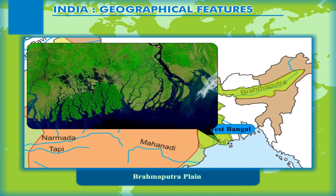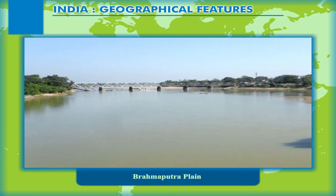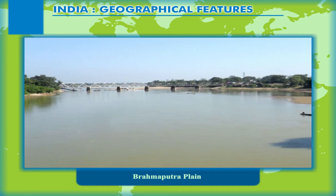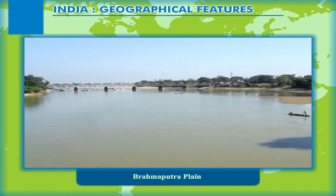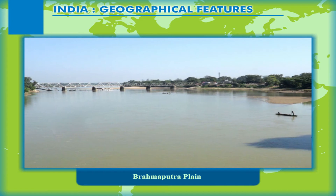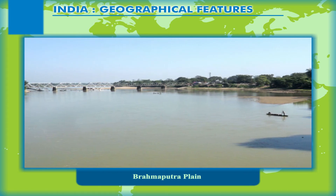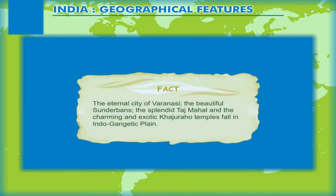The Brahmaputra plain is formed by the depositional material brought down by the Brahmaputra and its tributaries. In India, it is mostly located in Assam.